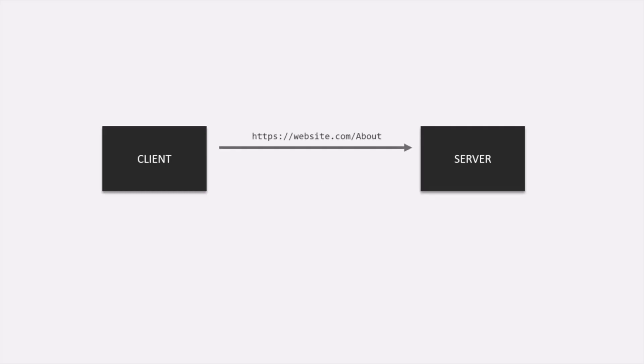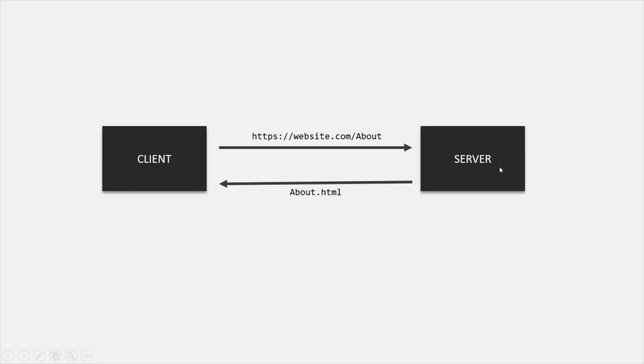Now let's try to understand what a single-page application is. But before that, let's understand how a typical web application works. So here we have a client and a server. From the client, we make a request to the server for a particular resource. In this example, we are making a request to the server for getting the HTML of the about resource, and the server sends us about.html. If we request for the contact page, the server is going to return contact.html in the response.